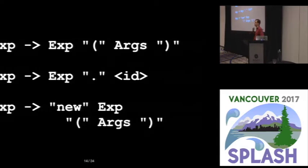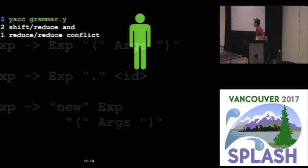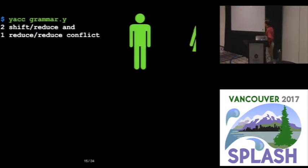Then he goes to add object allocation. Now he wants his language to be a prototype based language. So that means when allocating an object, we're passing in an expression that is the prototype for the object we're going to be constructing. When he does this, he gets some shift-reduce conflicts.